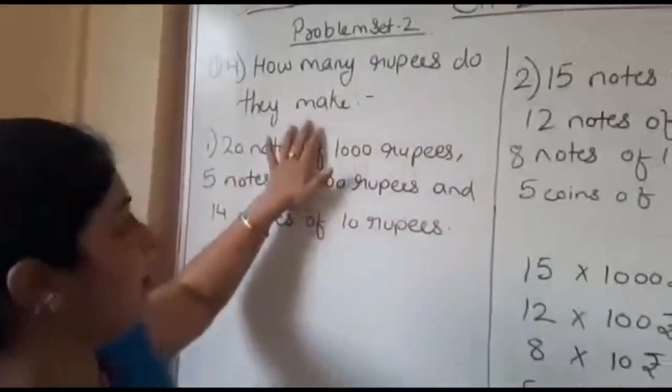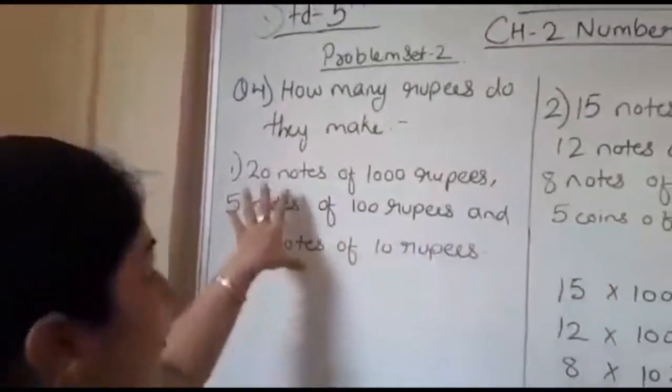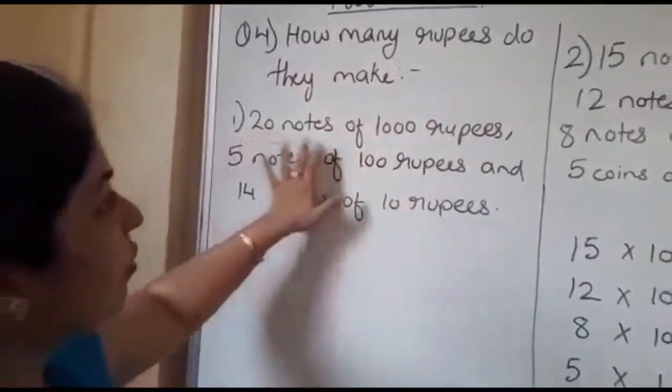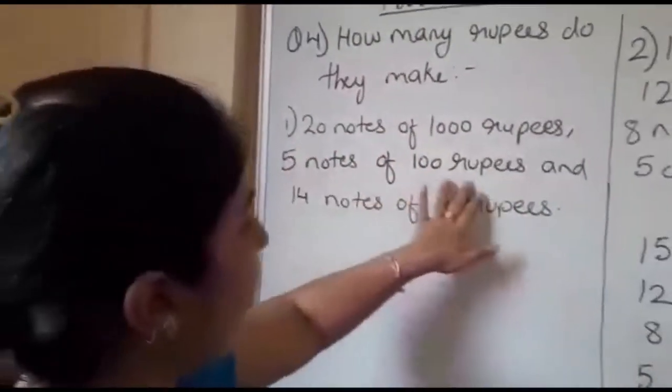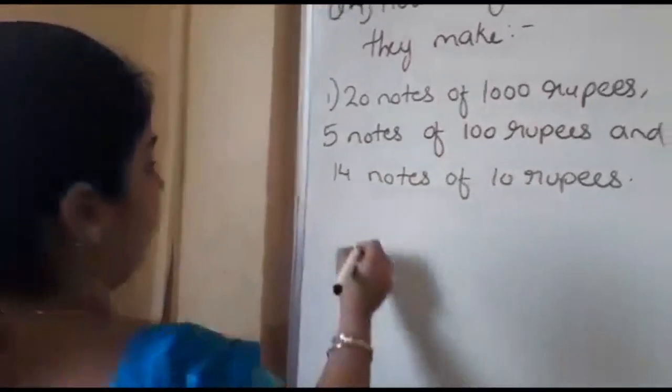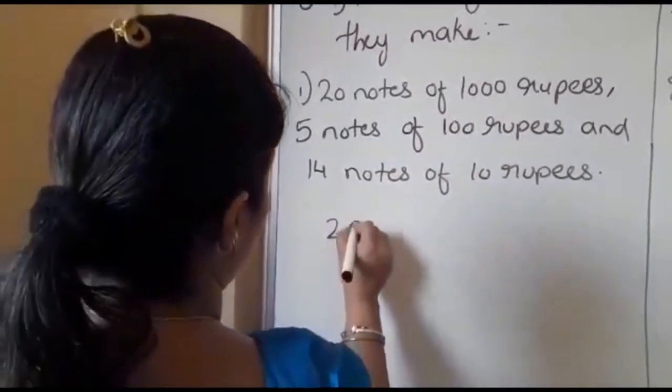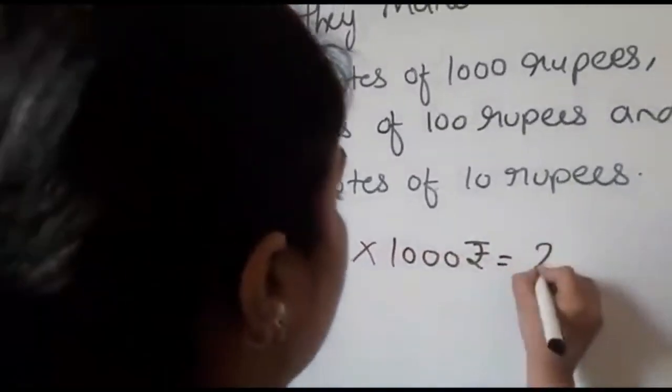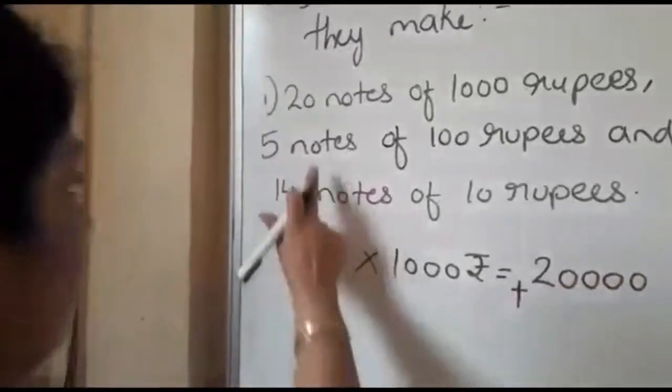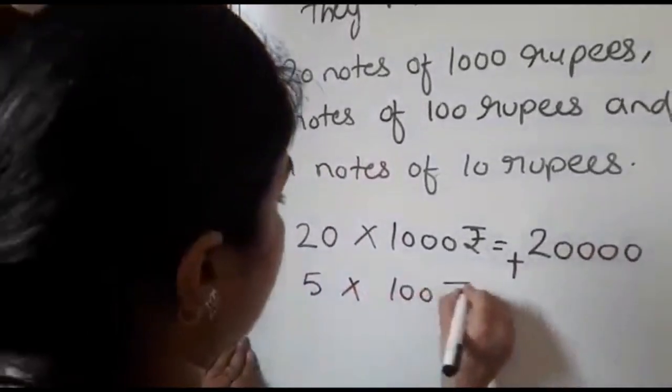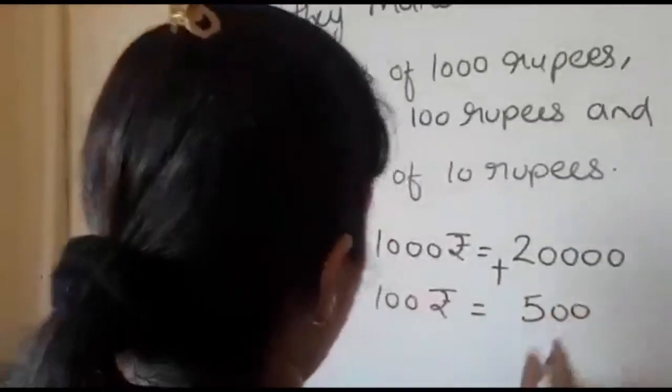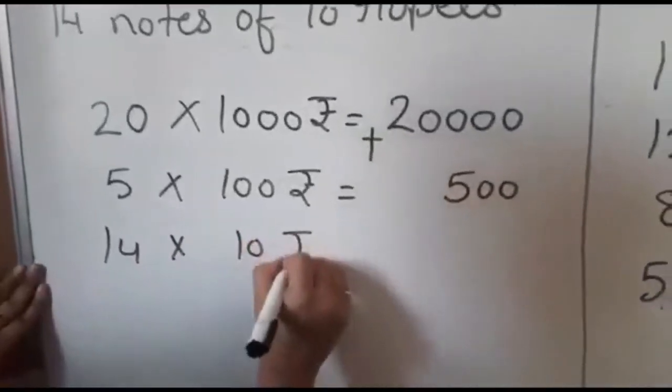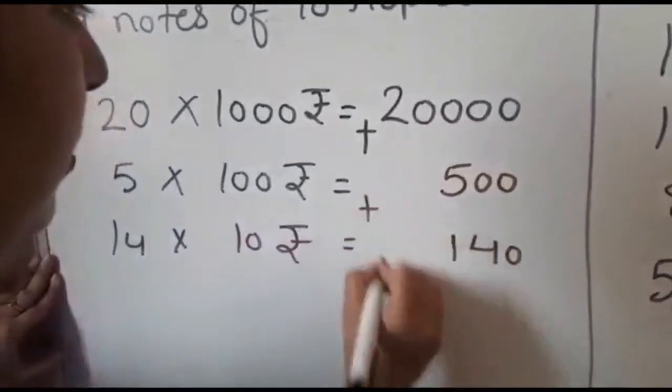Question 4: How many rupees do they make? In this question we have to sum up the rupees. First sum is 20 notes of 1,000 rupees, 5 notes of 100 rupees, and 40 notes of 10 rupees. We have to do sum like this: 20 notes of 1,000 rupees, so 20 × 1,000 comes to 20,000 plus 5 notes of 100 rupees make rupees 500, plus 14 notes of 10 rupees make 140 rupees.